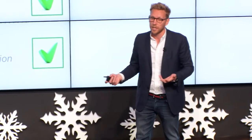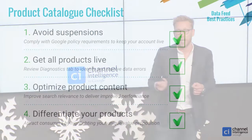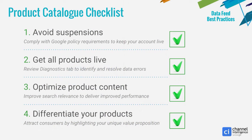That brings me onto number three: optimizing your product content. The lower the data quality that you have in your feed, the higher you're going to have to bid just to maintain the same level of visibility. So it's really important. And number four is to differentiate your PLAs — how do you stand out amongst all of the other offers in the Google search results page or in Google Shopping?